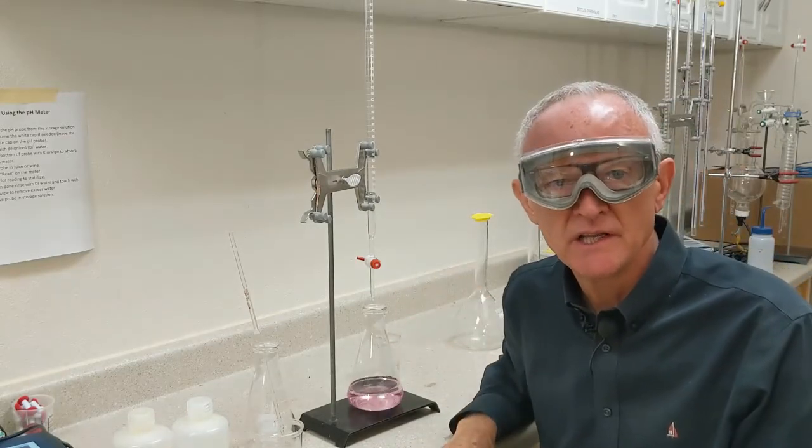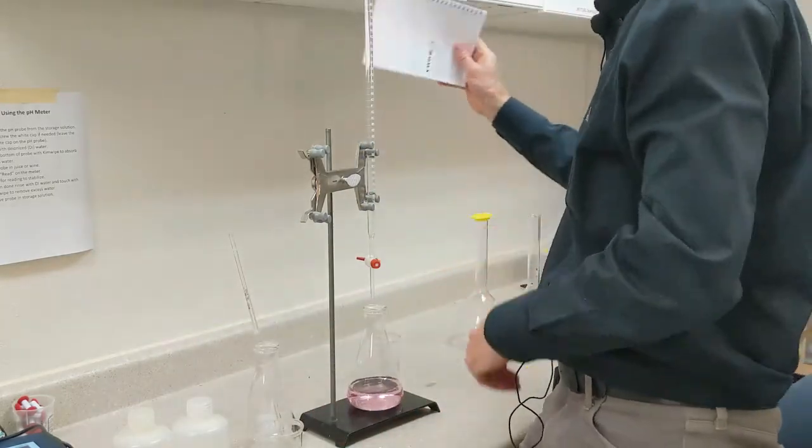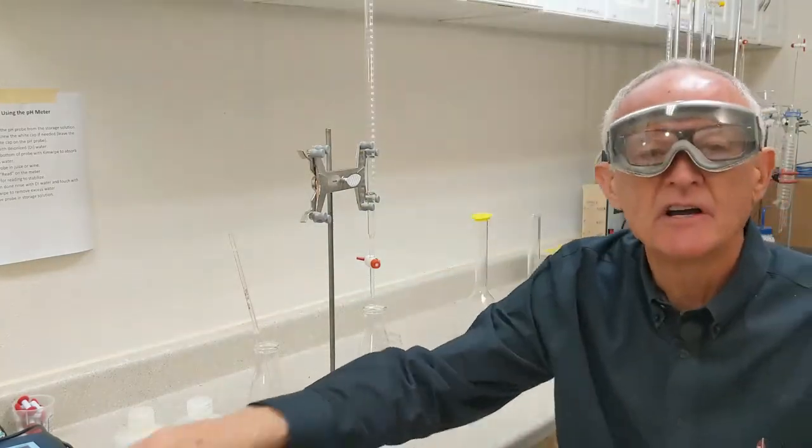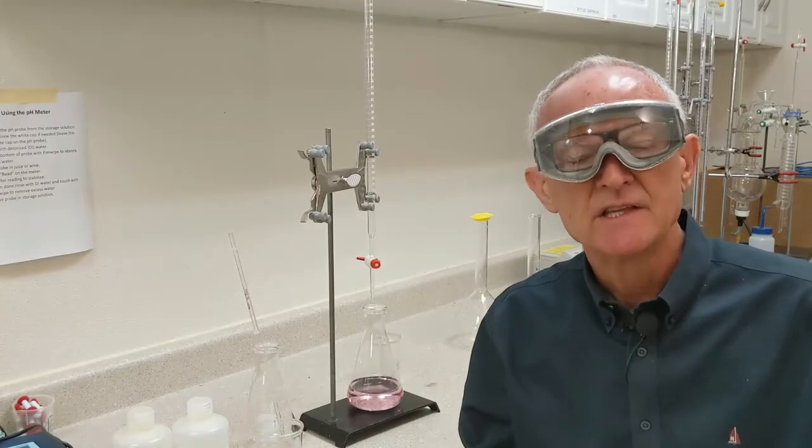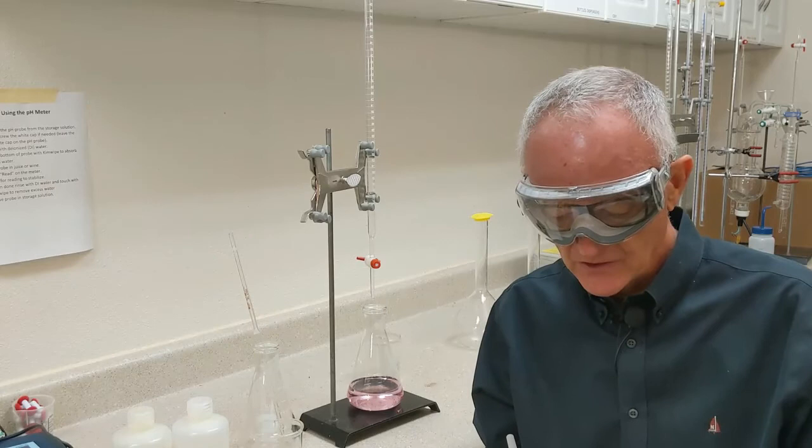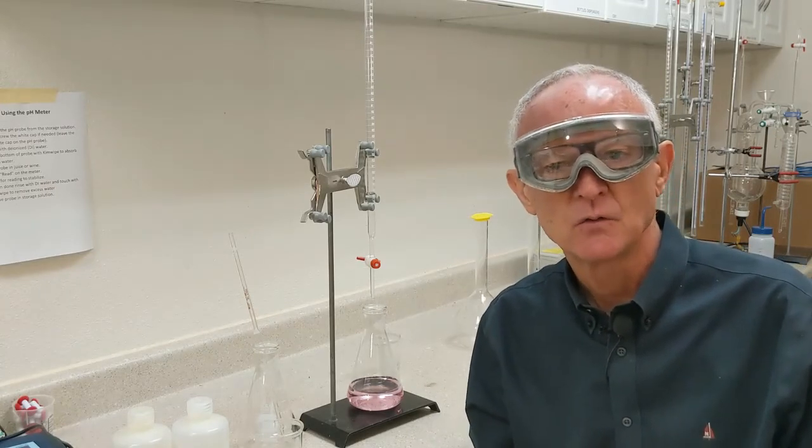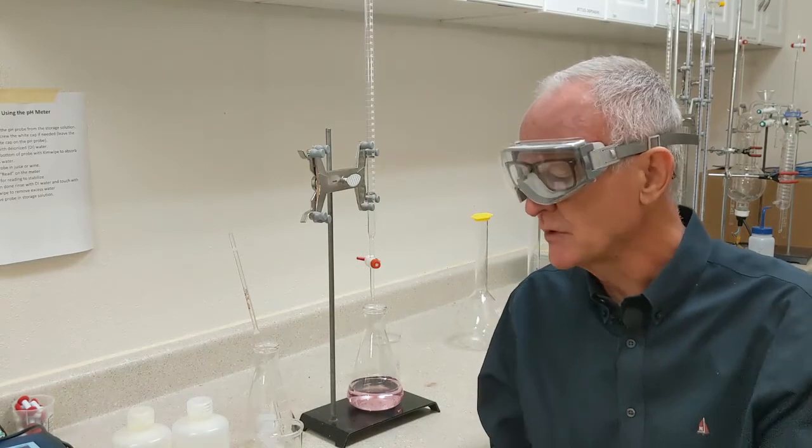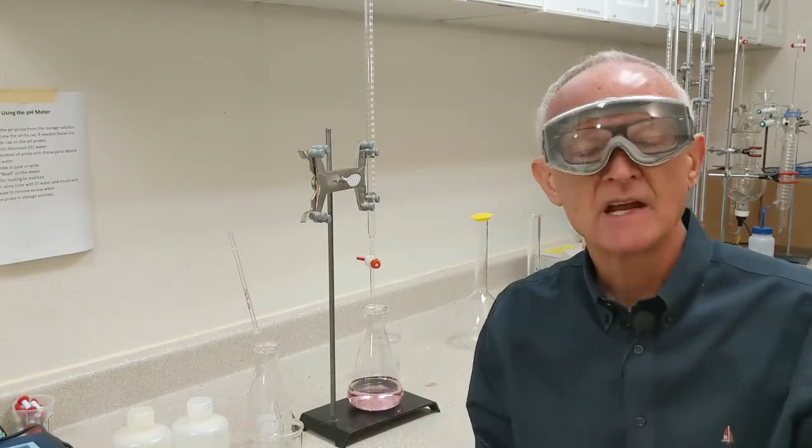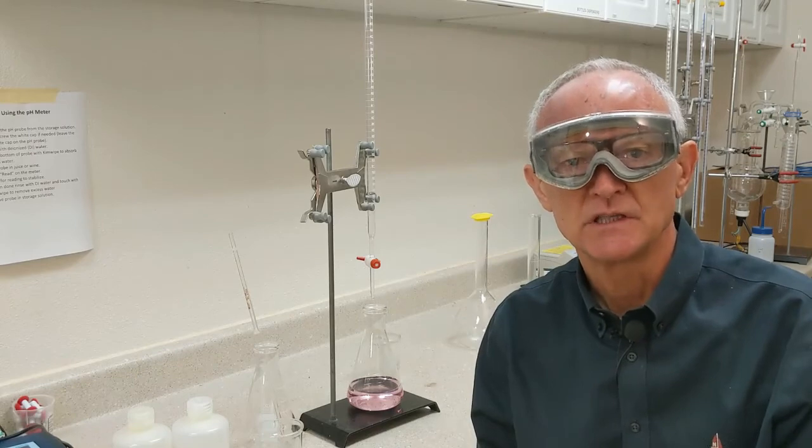My ending volume is exactly 14. In this second titration, I started at 10.3 mils. I ended at 14. So I used 3.7 milliliters. 14 minus 10.3. 3.7 milliliters. And I will use that in the calculation of titratable acidity.